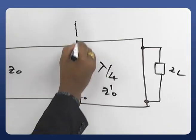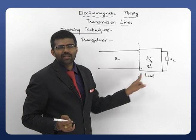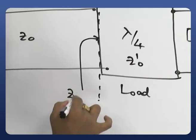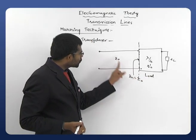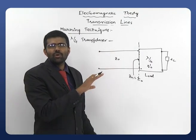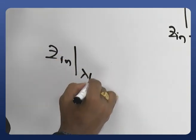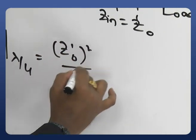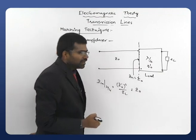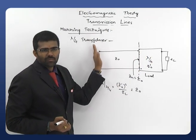Up to the load end, ZL alone is the load. But together with the lambda by 4 section, the combination is taken as the new load. This must match with Z0. To achieve that, we take the input impedance at this particular location and require it to equal Z0. If this input impedance equals Z0, the entire load is matched with the main transmission line and there will be no reflections. The input impedance of a lambda by 4 line is Z0' squared divided by ZL.